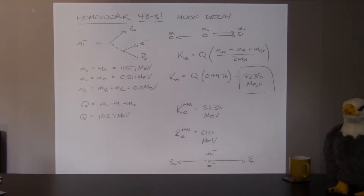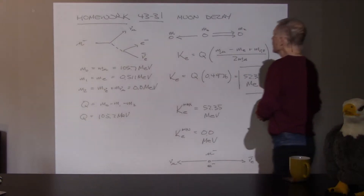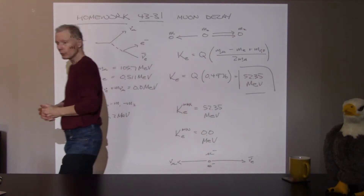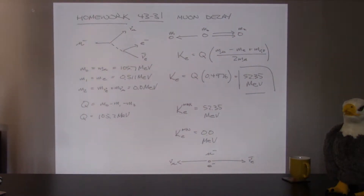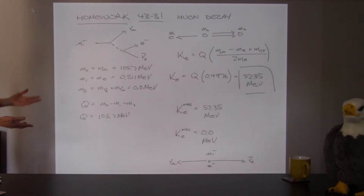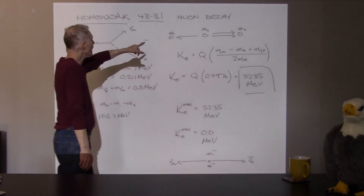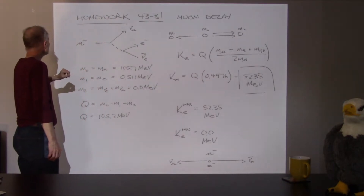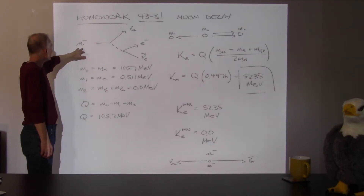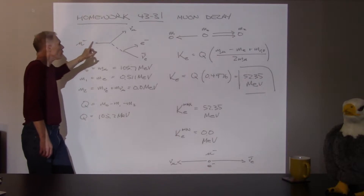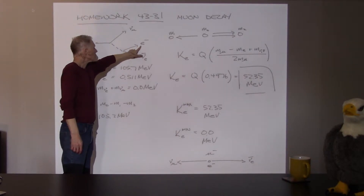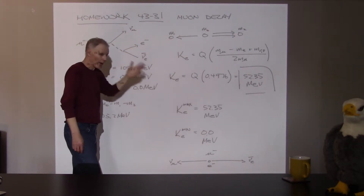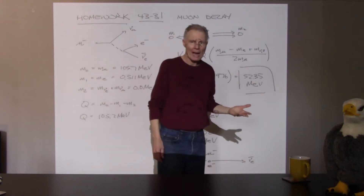All right, back from break. Let's take a look at those homework sample problems from chapters 43 and 44. I'm going to start with chapter 43. I think I had just a couple problems from the chapter. It's talking about muon decay, and it asks an interesting question: when a muon decays, what's the most kinetic energy an electron coming out from the decay could have?